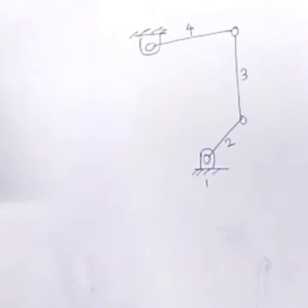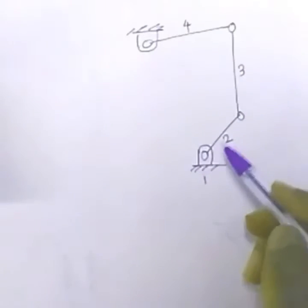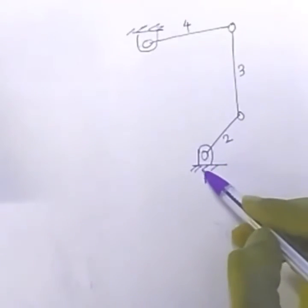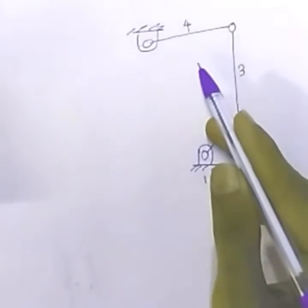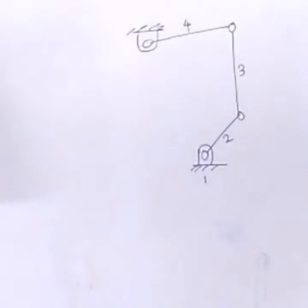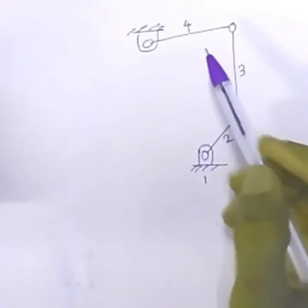So consider simply this four bar chain. You know, this link 1, this link 2, link 3, and link 4. What it does is the larger link which is connected to the fixed link is simply extended.